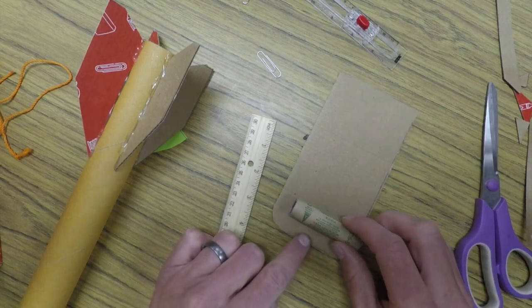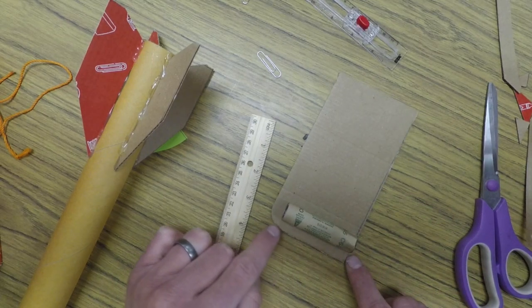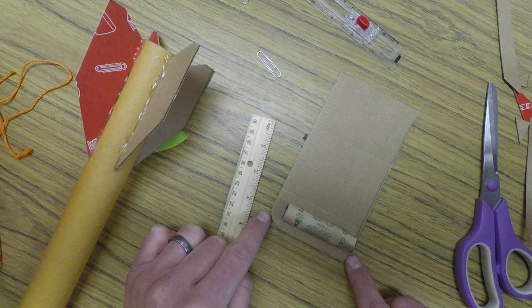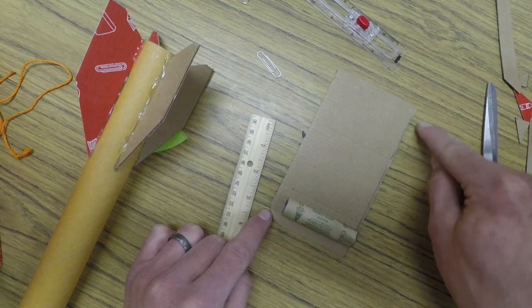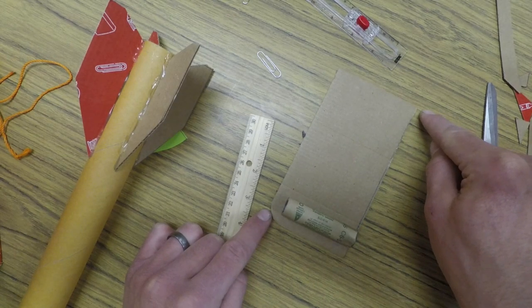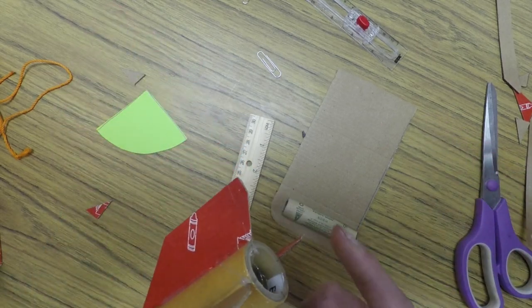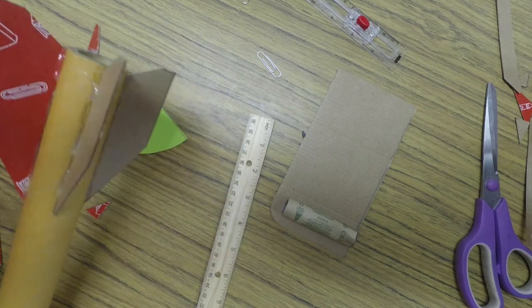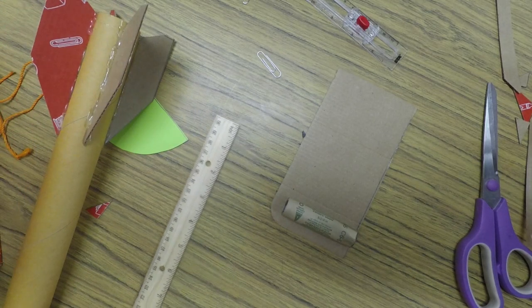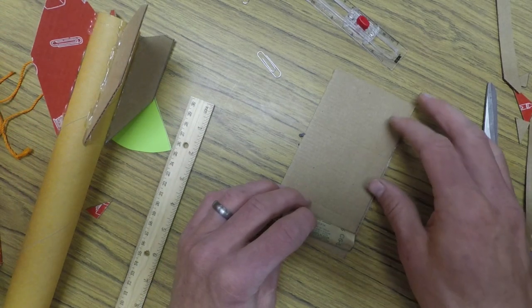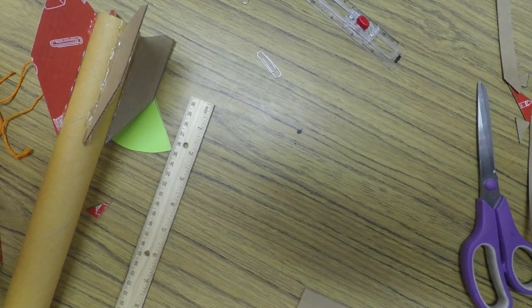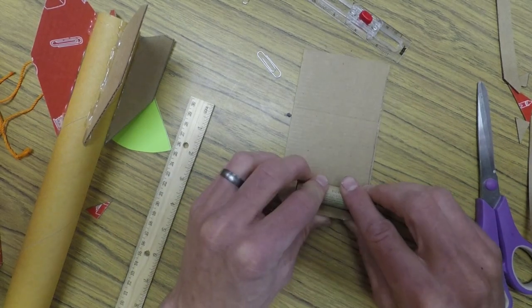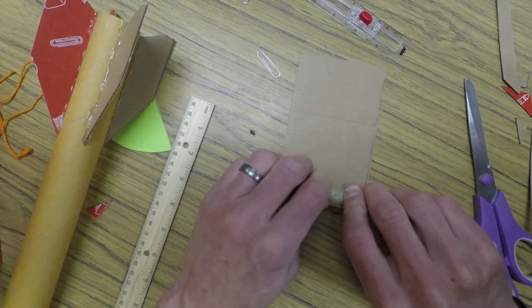I usually make it at least 3 inches, if not 3 and a half inches wide, and then anywhere from 7 to 10 inches long, depending on how big my tube is. My tube is a fairly big tube, so I don't need a big piece of cardboard. But the idea is, if you have a dead engine, I just use that and roll the cardboard around it.